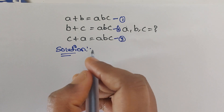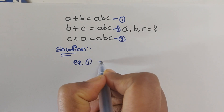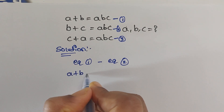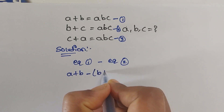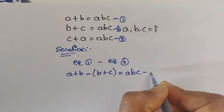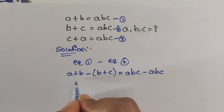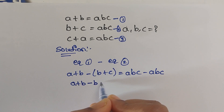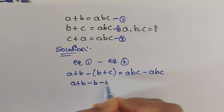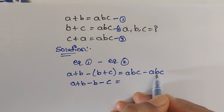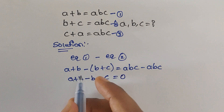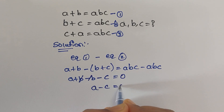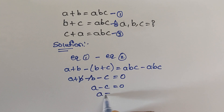First we have to subtract equation 1 and equation 2. So equation 1 (a plus b) minus equation 2 (b plus c) equals abc minus abc. So a plus b minus b minus c equals 0. The plus b minus b gets cancelled, and we get a minus c equals 0, which means a equals c.